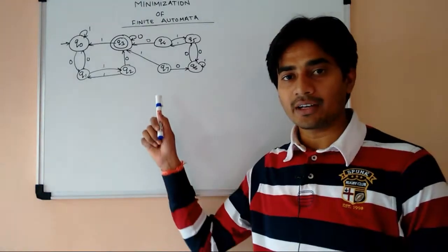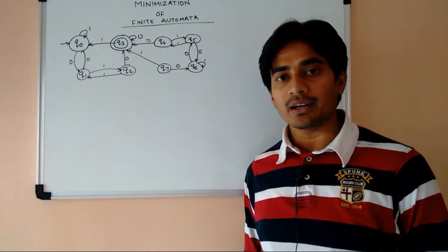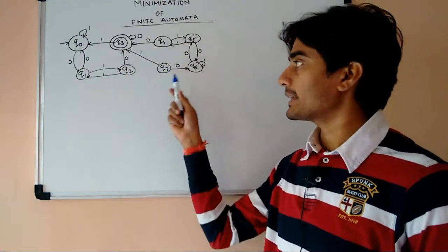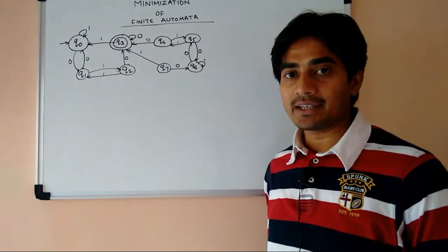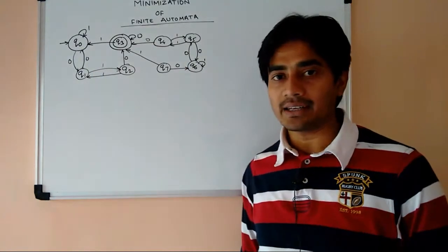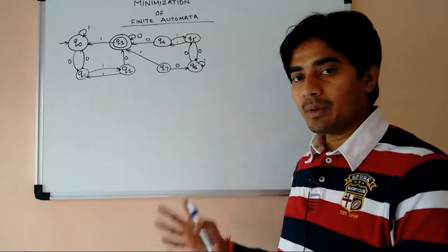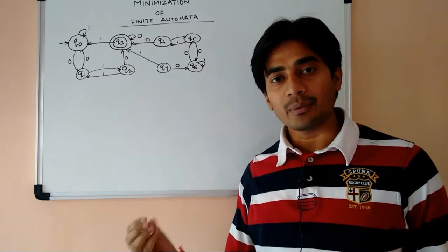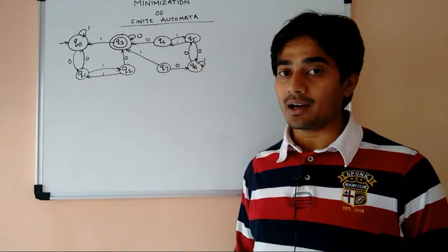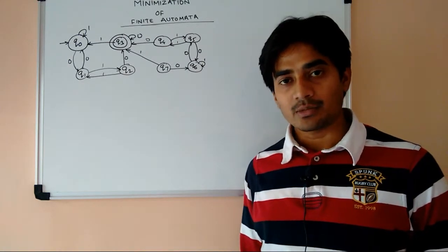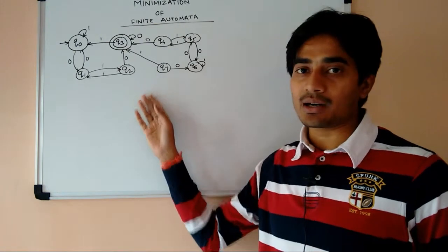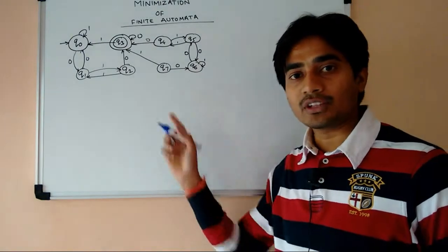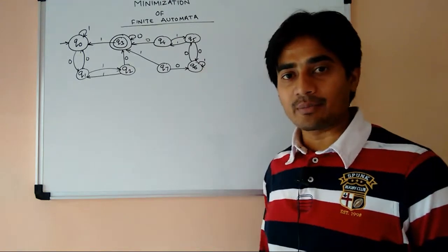Friends, here we have a finite automata and our task is to minimize this automata. This automata has a total of 8 states, where Q3 is the final state and all others are non-final states. Now we are going to minimize this automata. It might be possible that we can design the same automata with a lesser number of states. Let's first draw a transition table for this finite automata so that mapping for alphabets will be easier.